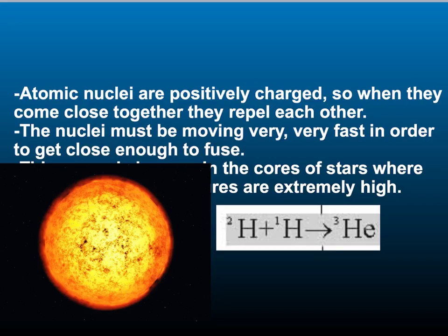We have a problem with trying to do nuclear fusion on Earth. Atomic nuclei are positively charged, so when they come close together, they repel each other. In order to give them enough energy to overcome this repulsion, the nuclei must be moving very, very fast in order to get close enough to fuse. The only place where this can happen naturally is in the cores of stars, where the temperatures are extremely high.